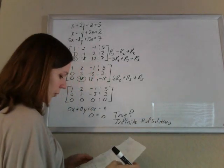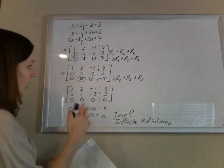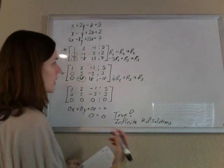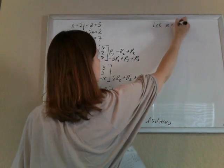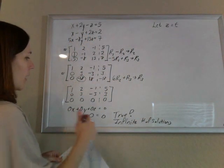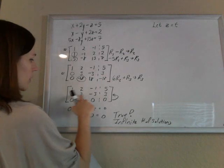And so what we're going to do is we have a free variable. I'm going to let z be whatever it wants. I'm going to let z equal some variable t. And then I'm going to back up to this row here.